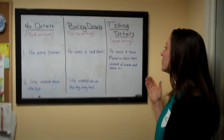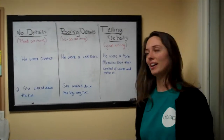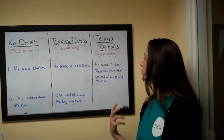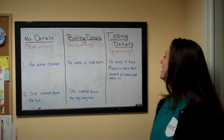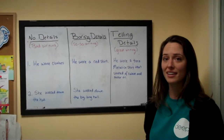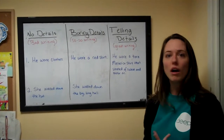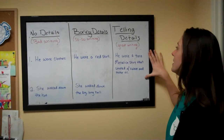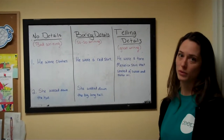It doesn't just tell you that he wore a Metallica shirt — it tells you he probably likes heavy metal music. It tells you he wears torn shirts, so maybe he doesn't have a ton of money, or maybe he likes the grunge style. If he smells of sweat and motor oil, it tells you he probably works on a motorcycle or car, or works in a garage. This is a telling detail because it tells you so much more than just what it says.